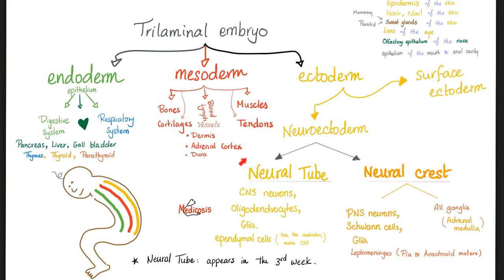Central nervous system comes from the neural tube; peripheral nervous system comes from the neural crest. A ganglion is a collection of somas in the peripheral nervous system — that's why all ganglia came from the neural crest. The cells that myelinate the CNS are oligodendrocytes, from the neural tube. The cells that myelinate the PNS are Schwann cells, from the neural crest. Ependymal cells are inside the brain lining the ventricles and making cerebrospinal fluid — they come from the neural tube. Leptomeninges are more peripheral, so they are neural crest.